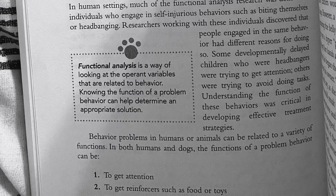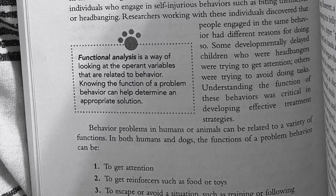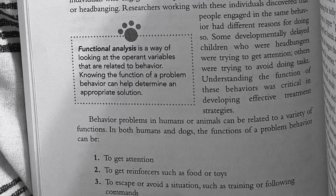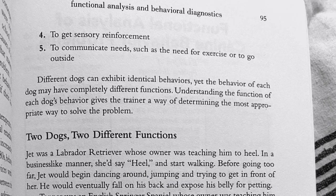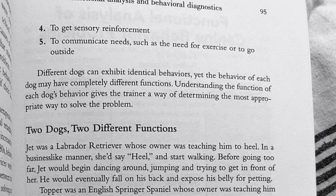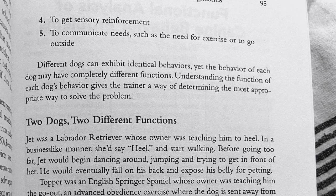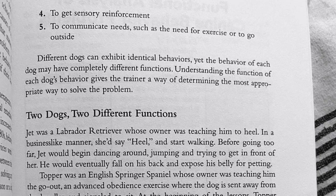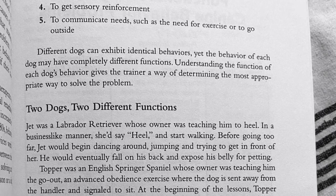Behavior problems in humans or animals can be related to a variety of functions. In both humans and dogs, the functions of a problem behavior can be: one, to get attention; two, to get reinforcers such as food or toys; three, to escape or avoid a situation such as training or following commands; four, to get sensory reinforcement; and five, to communicate needs such as the need for exercise or to go outside. Different dogs can exhibit identical behaviors, yet the behavior of each dog may serve completely different functions. Understanding the function of each dog's behavior gives a trainer a way to determine the most appropriate solution.